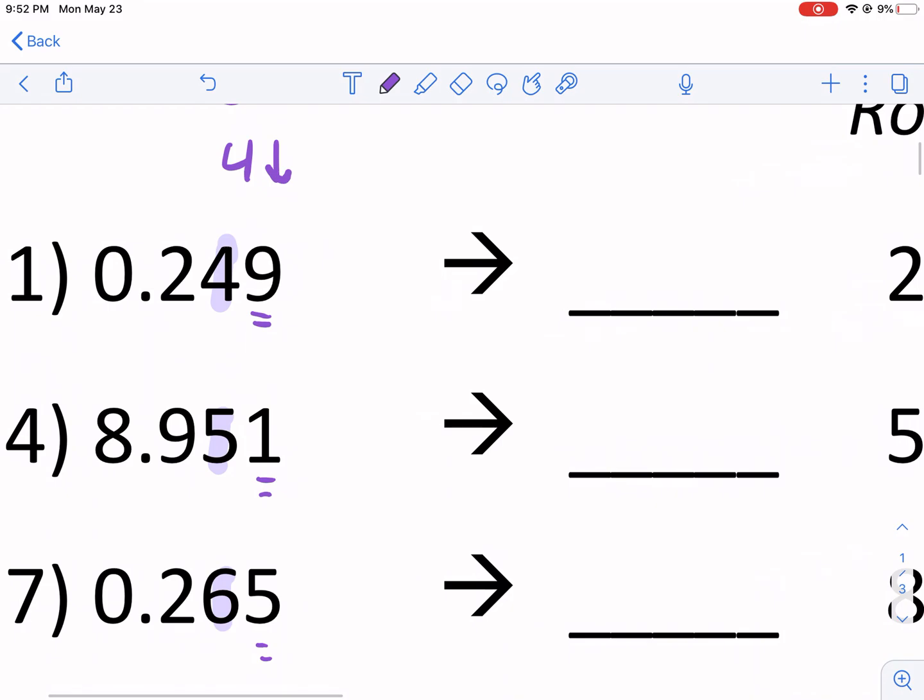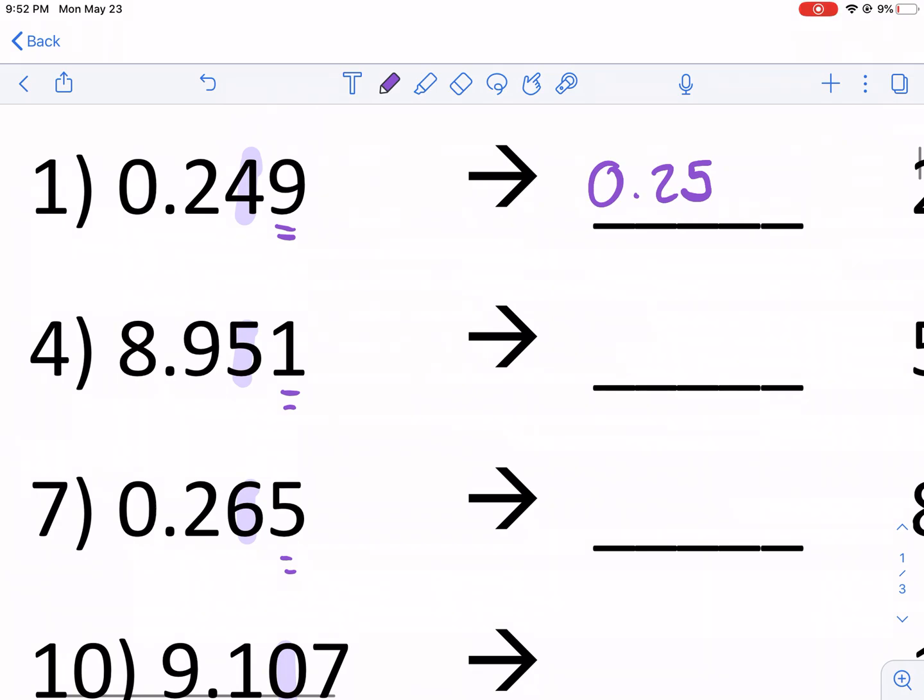So this one's a 9. So we're going to tell this guy to round up. So 0.2, we round up to 5. And if you want, you can have a placeholder 0. But technically, if it's after the decimal place, we don't need to have that. 0.25 and 0.250 are the same thing. But if it helps you, again, that's a place counter. So 0.25 is the rounded form of this.